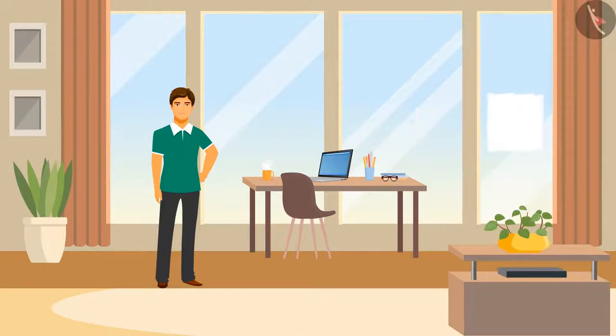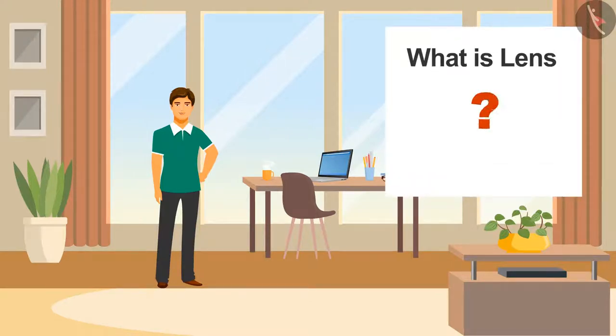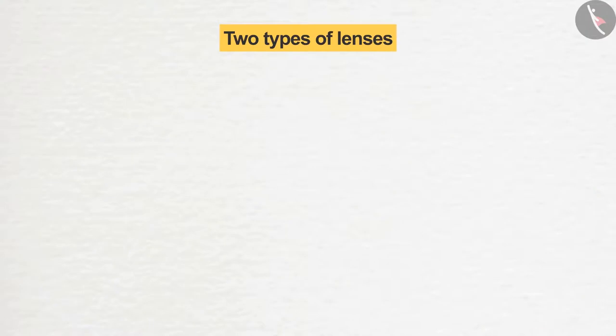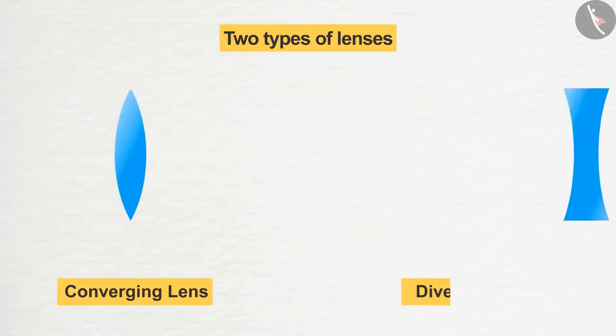What is lens? First of all, we need to know what these lenses are. There are broadly two types of lenses. One is converging lens and the other one is diverging lens.